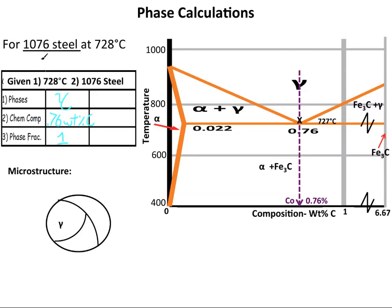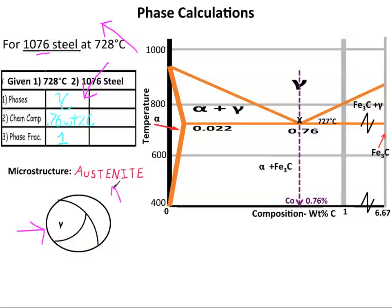We're going to draw the microstructure for these given conditions. For 1076 steel, which has the eutectoid composition at 728 degrees Celsius — which is 1 degree above the eutectoid temperature — I've already done these calculations in the previous video. Seeing as that we are in a single-phase region, our microstructure looks like this. It is just single-phase solid gamma. We call this austenite. I've drawn some grain boundaries in here so you can tell it's a solid.